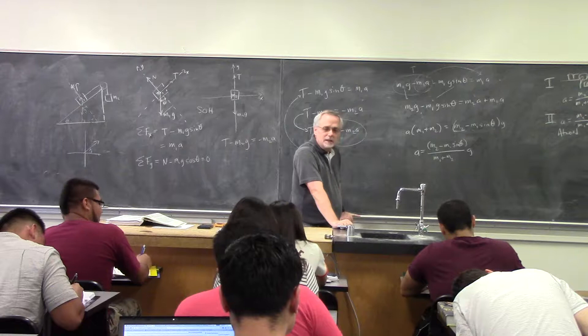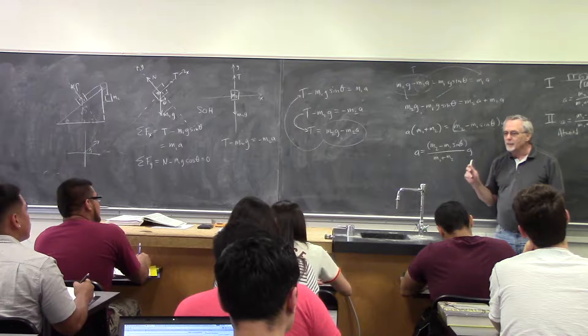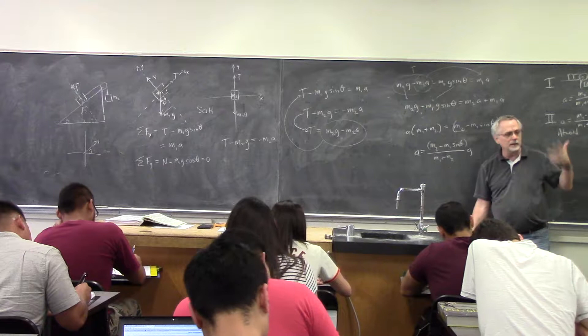Let's look at a couple things here and see if we're happy. In the denominator, what do I hope to find? The sum of all the masses. Do I have that? Yes. So even if it's wrong, it's not entirely wrong. I can't have a subtraction in the denominator — the denominator needs to be the sum of the masses.